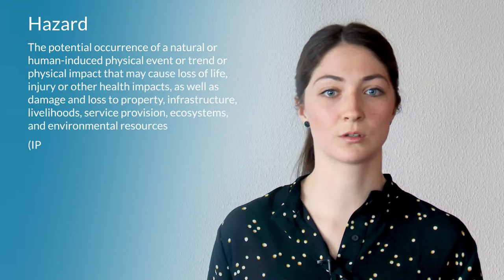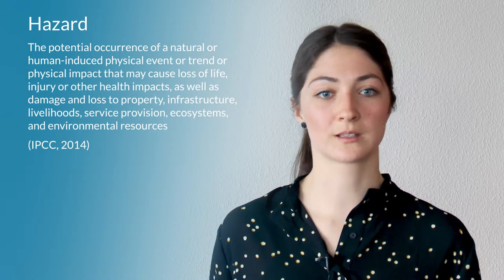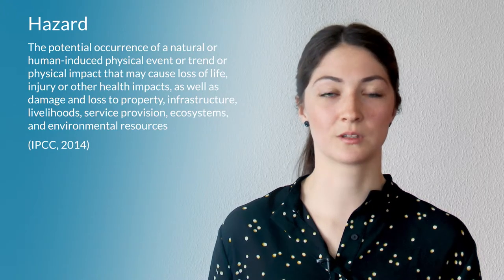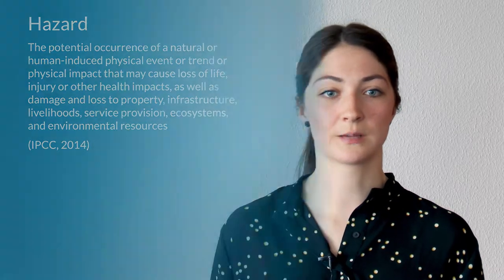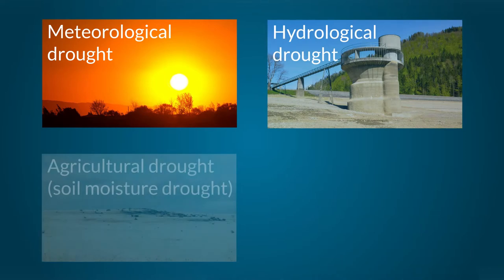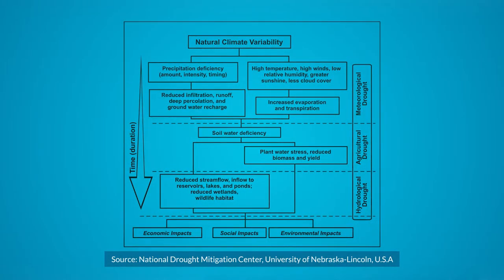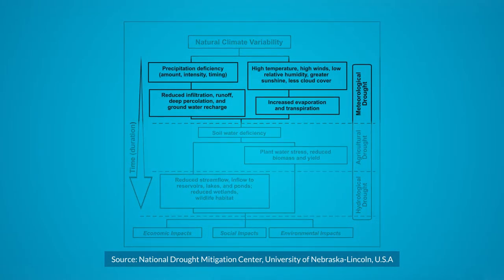Now let's look at the hazard definition — a short reminder from the first lecture. Hazard is the potential occurrence of a natural or human-induced physical event; here the hazard we are looking at is drought. Drought is not a single type — we have meteorological drought, hydrological drought, agricultural drought (also called soil moisture drought in this project), and socio-economic drought. All these drought types are explained in the figure, but we want to concentrate on the upper part of the figure: meteorological drought.